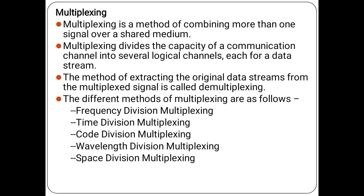Multiplexing is the method of combining one or more signals over a shared media. It divides the capacity of the communication channel into several logical streams, each for a data stream. The method of extracting the original data stream from the multiplexed signal is called demultiplexing. The different types of multiplexing are Frequency Division Multiplexing, Time Division Multiplexing, Code Division Multiplexing, Wavelength Division Multiplexing, and Space Division Multiplexing.